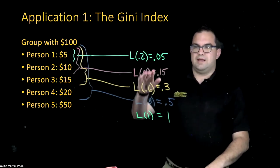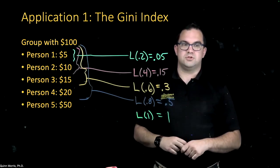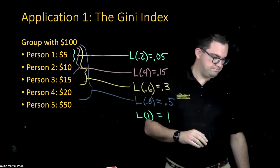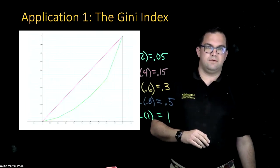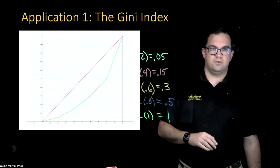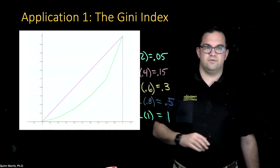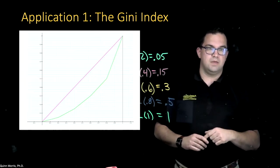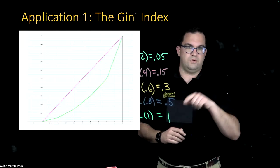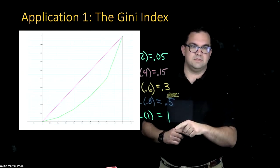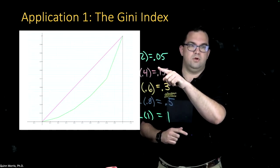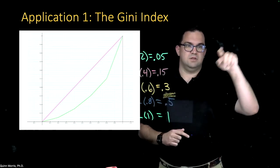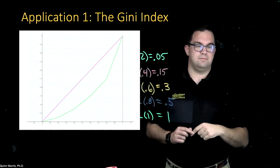Now that we have these points, we can plot the Lorenz Curve. In between the known points, I'll extrapolate by drawing a line. The red line is the line of equality and the green curve is what I get by plotting these points — (0.2, 0.05), (0.4, 0.15), and so on — and linearly extrapolating between those points.